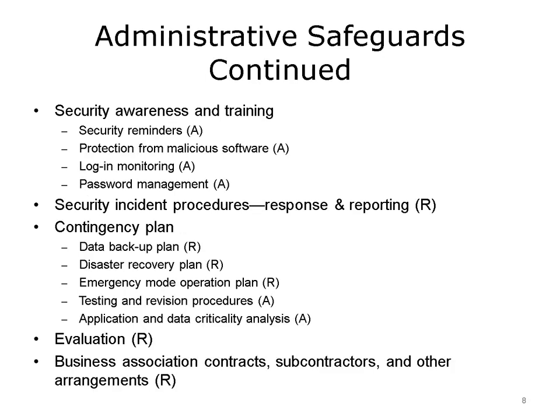Continuing with the administrative safeguards, security awareness and workforce training cover concerns such as security reminders, protection from malicious software like viruses and spyware, login monitoring, audit trails, and password management. All of these issues must be addressed, and a process must be in place for security incident procedures. Organizations also need a contingency plan, which includes data backup, disaster recovery, and emergency response procedures. There also needs to be an evaluation of the security process as it pertains to agreements with an organization's business associates and their subcontractors. A disaster recovery plan for the IT Department and the organization should be developed and tested annually.